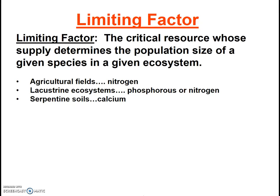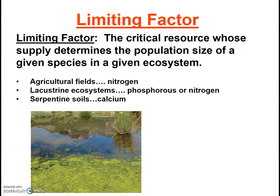Regardless of the limiting factor, if the factor is depleted, the organism cannot grow, reproduce, or perhaps even survive. On the other hand, if too much of it is present, you may also have a problem. Consider what happens when extra phosphorus is added to lake systems — algae blooms. The algae is stinky and limits swimming, but it can also have detrimental effects on the other organisms in the ecosystem.